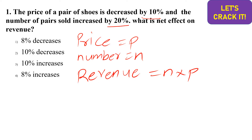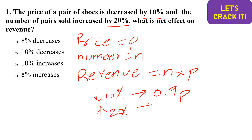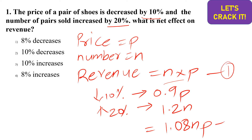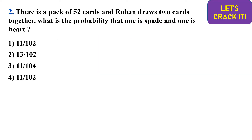After the change, price decreases by 10 percent, so price becomes 0.9p. The number of pairs sold increases by 20 percent, so n becomes 1.2n. The new revenue is 0.9p × 1.2n = 1.08np. Initial revenue was np and final revenue is 1.08np, so the net effect is an 8 percent increase. Gain percent equals 8 percent.